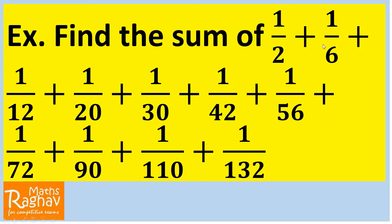So this series is neither in AP nor GP. For GP, if the first term A is 2 and A times R gives 2 times 3, if we take R as 3, then further terms would not come to 12, 20, 30, 42. So this series is also not in GP.